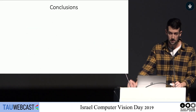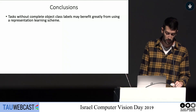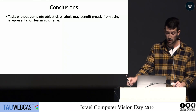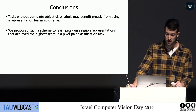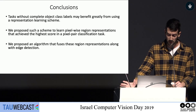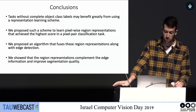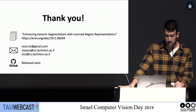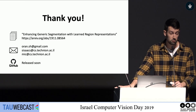In conclusion, tasks without complete object class labels can benefit from using a representation learning scheme. We proposed such a scheme to learn pixel-wise region representations that achieve the highest scoring on the pixel classification task we suggested. We proposed an algorithm that fuses these region representations with edge detection, showing that region representations complement edge information and improve segmentation quality. More information and ablation studies are available on the paper on arXiv, and the code will be released soon.